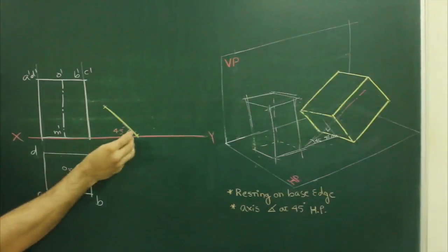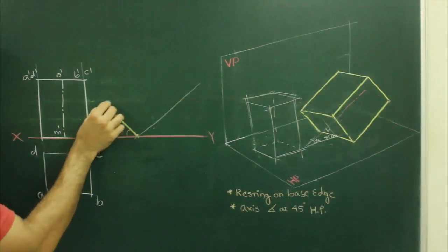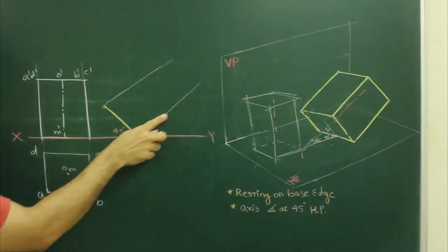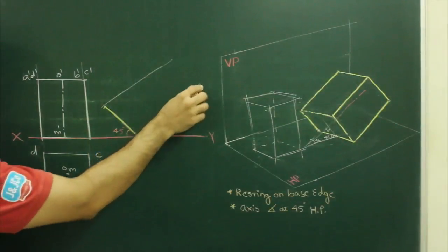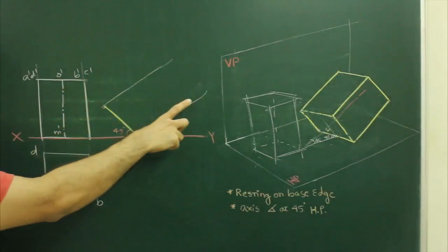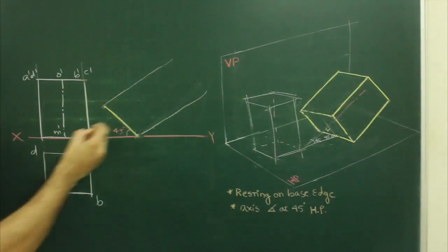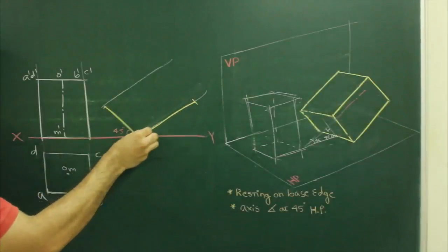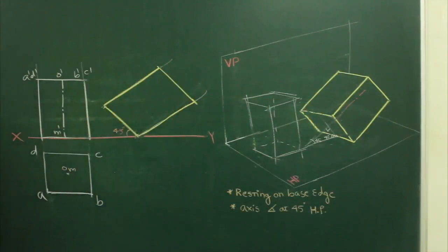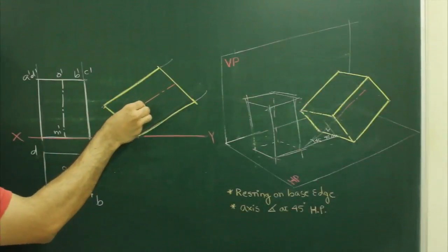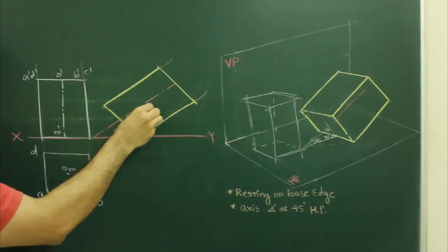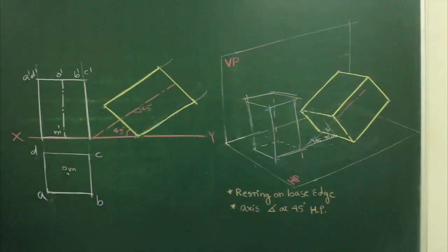Then I will draw 45 degrees, take this distance, and cut down. So we have drawn a square prism which is inclined at 45 degrees to horizontal.